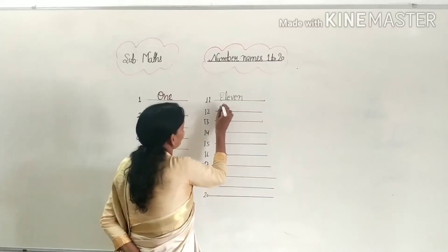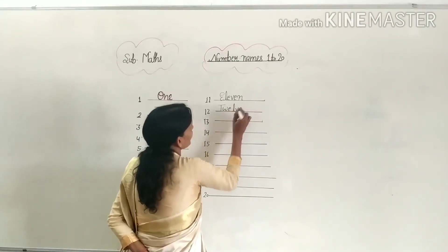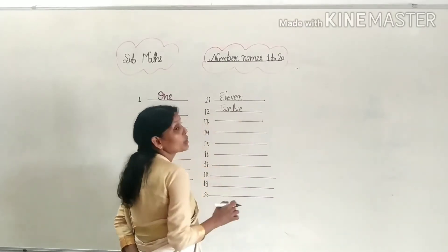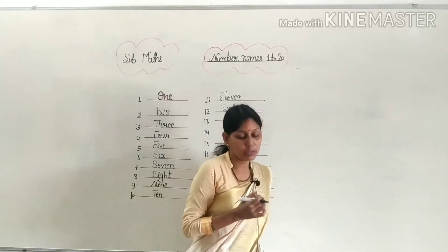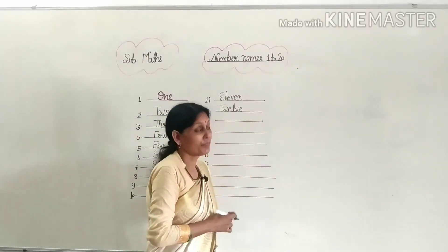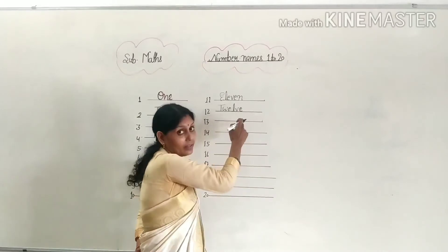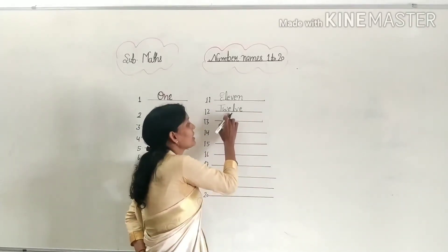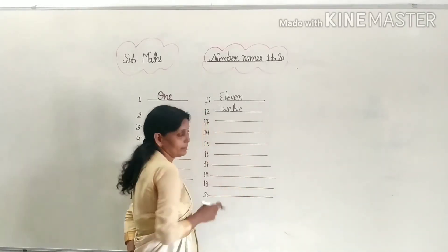11 and 12 spellings are a little bit longer, this is why you may make mistakes. So you will learn these carefully. 11 is E-L-E-V-E-N. And 12 is T-W-E-L-V-E. T-W-E-L-V-E, 12.